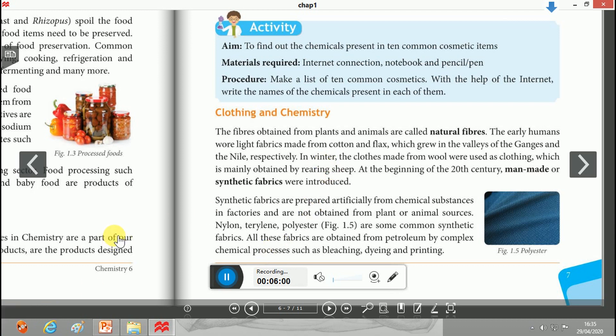But now we are using man-made or synthetic fibers. Synthetic fabrics are prepared artificially from chemical substances in factories and are not obtained from plant or animal sources. However, rayon is a fabric which is semi-synthetic in nature and uses cellulose, a natural polymer, along with other chemicals. Nylon cloths are of different types: nylon 6, nylon 66, and nylon 23.